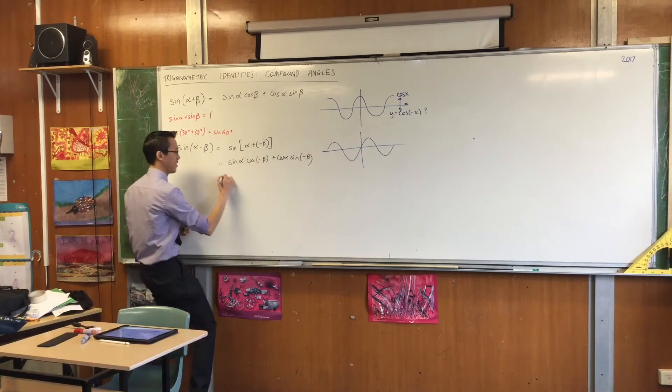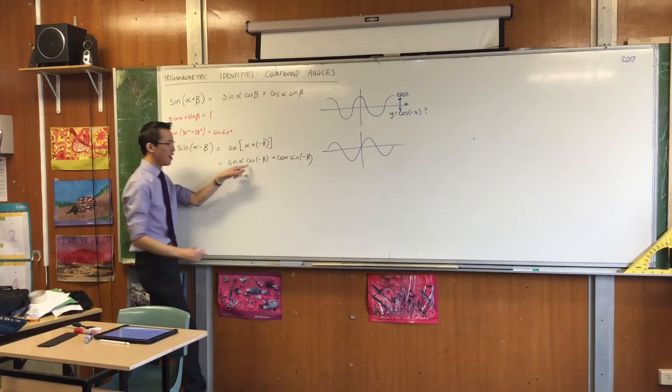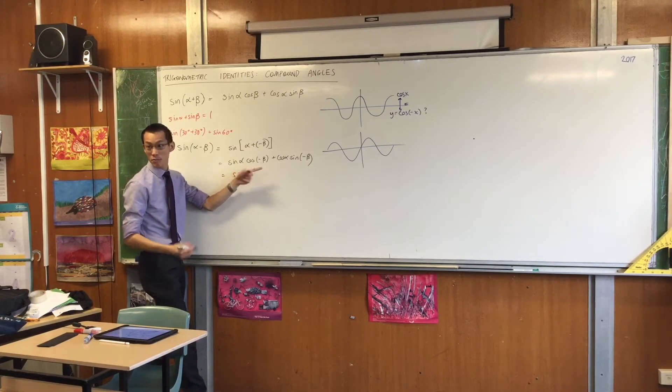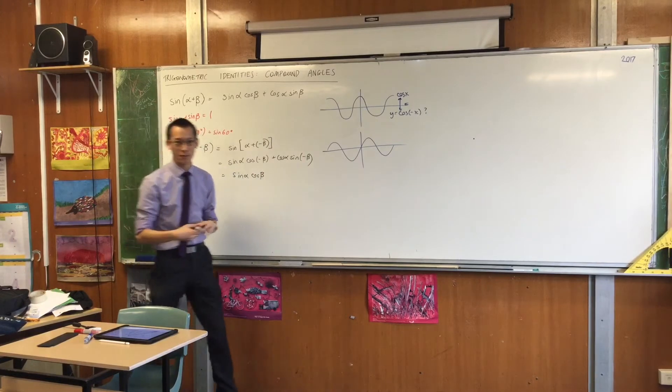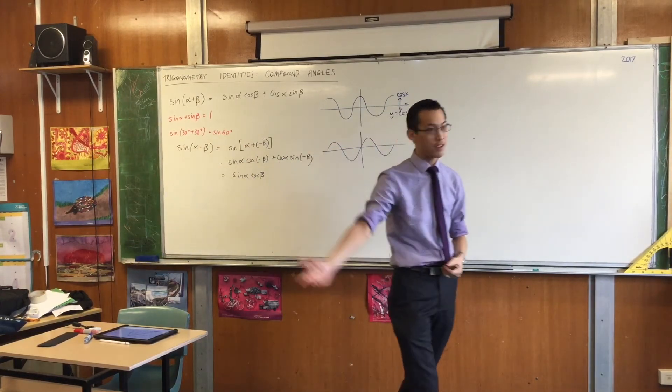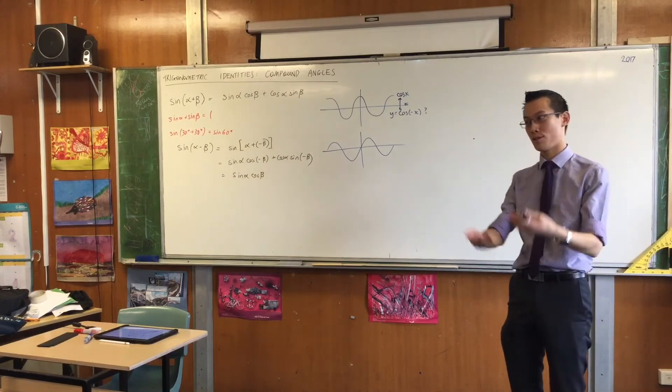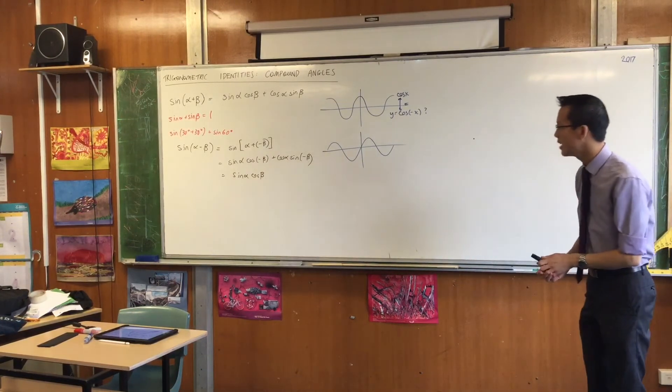So, in fact, these two things are equal to each other. Cos of negative x equals cos x. So, I can actually write down here, sine alpha. I can just write that as cos beta. And you can go ahead, you can check on your calculator, right? Cos of 30 is root 3 on 2. Cos of negative 30, your calculator will still tell you, is root 3 on 2.